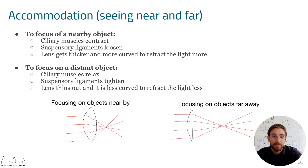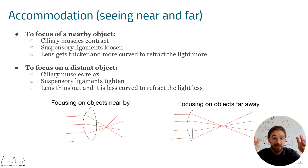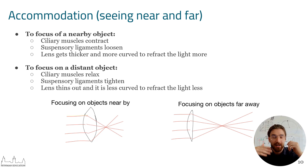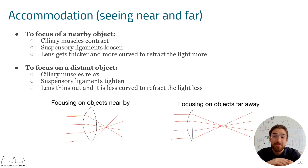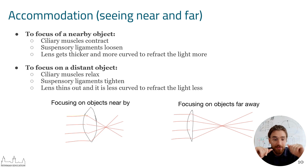How does the shape of the lens affect whether we're focusing on something near or far? To focus on a nearby object, the lens needs to get wider to bring the image further out toward the retina. This is controlled by the ciliary muscles, which contract to make the lens fatter and wider to bring the image further out so the retina can respond and focus on that object.